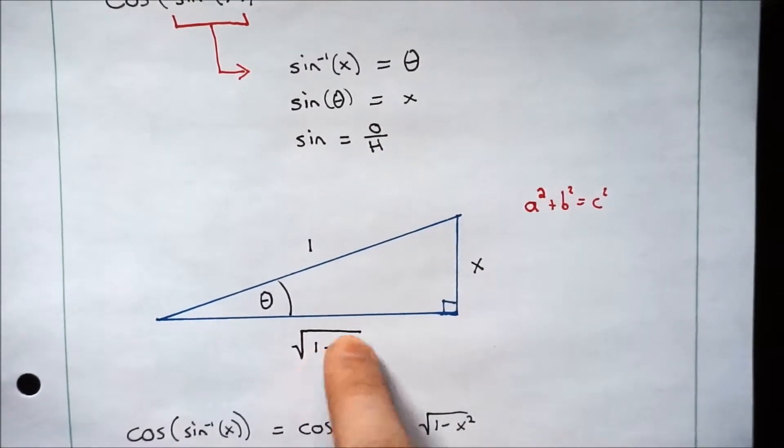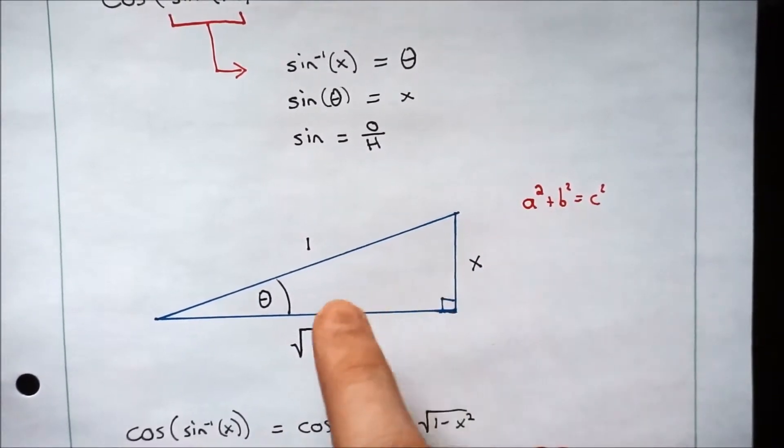So how did I get this? Well, you've got to use Pythagoras' theorem. So we've just taken the square root of 1 squared minus x squared to give you that one.